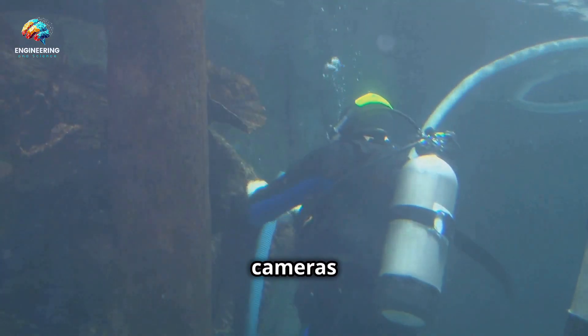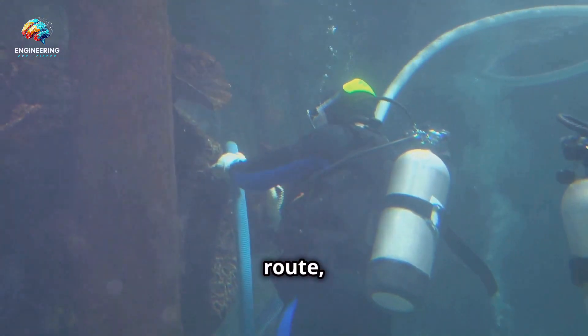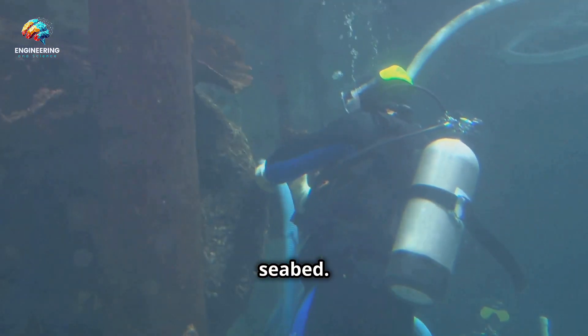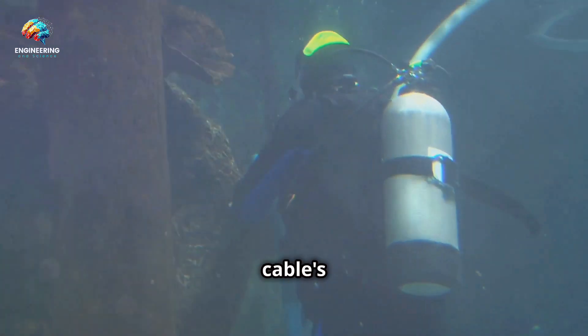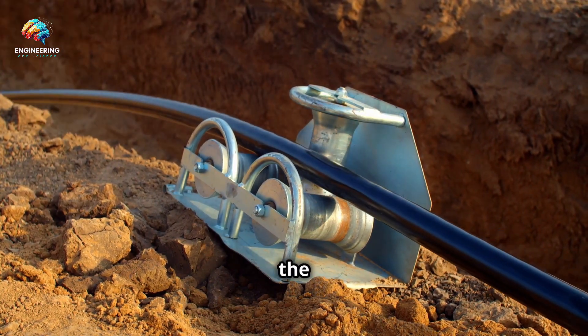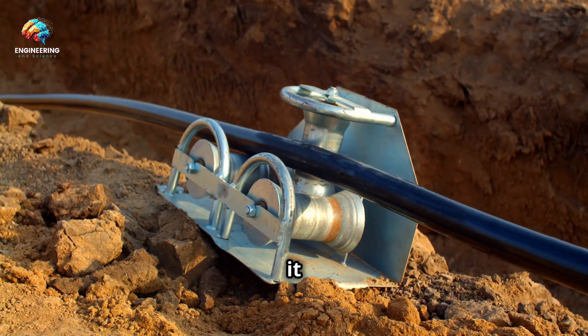ROVs use high-resolution cameras and sonar to ensure the cable is laid precisely along the planned route, avoiding obstacles and minimising disturbance to the seabed. This precision is vital for the cable's performance. In shallower waters, the cable might be buried beneath the seabed using a plough-like device, which helps protect it from potential damage.